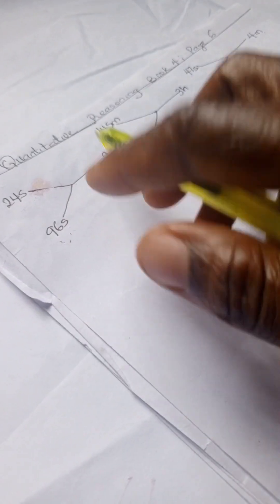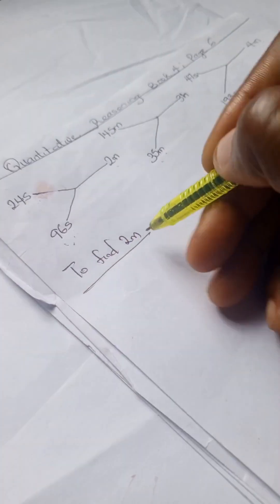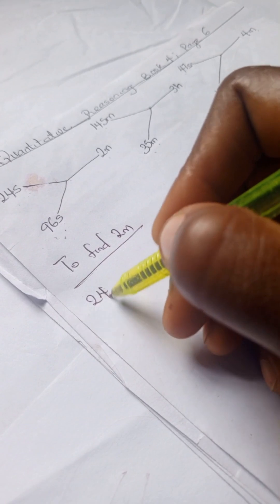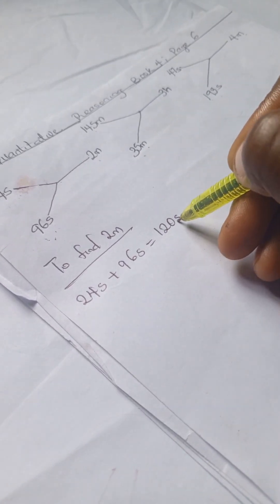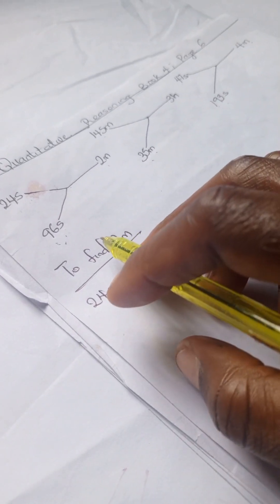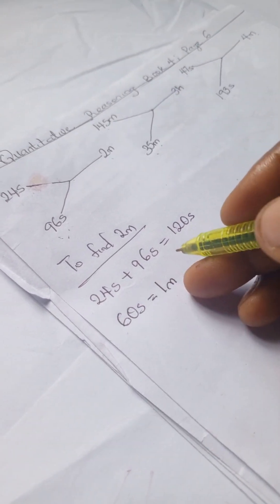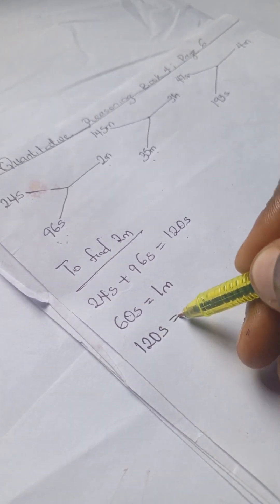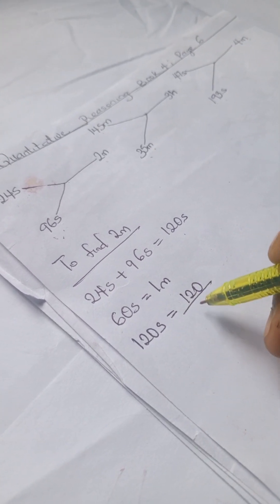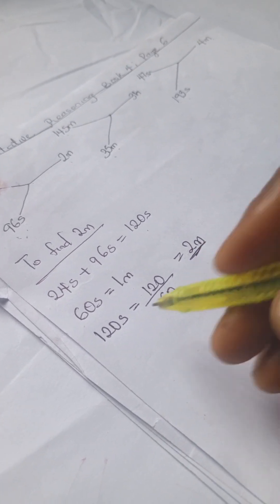We're going to be solving — let's look at this. To find 2 minutes, we're going to have 24 seconds plus 96 seconds, which gives us 120 seconds. Now according to the rules in time, 60 seconds gives us 1 minute. So to get how many minutes we have in 120 seconds, we do 120 divided by 60, and that gives us 2 minutes.